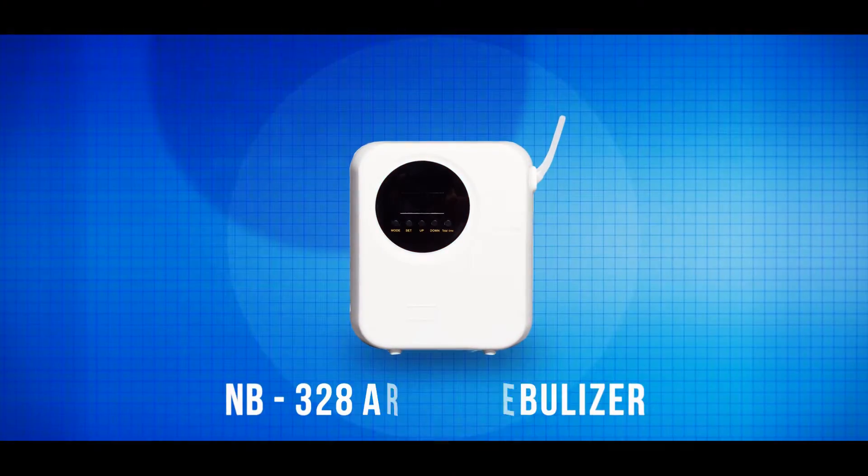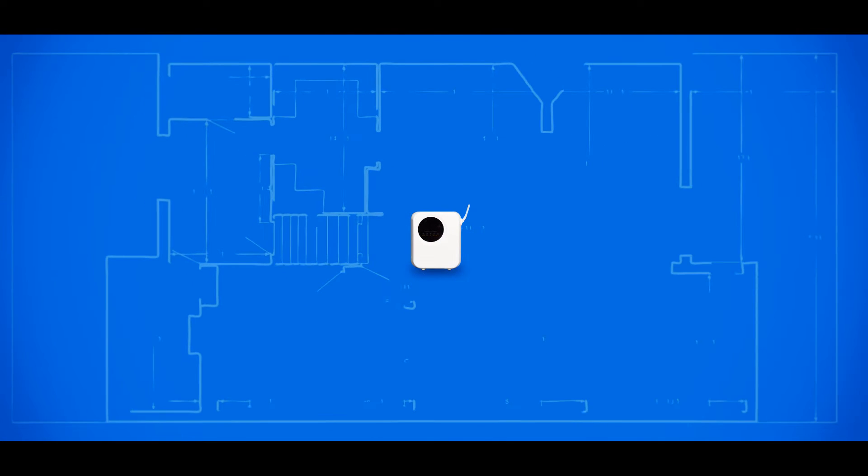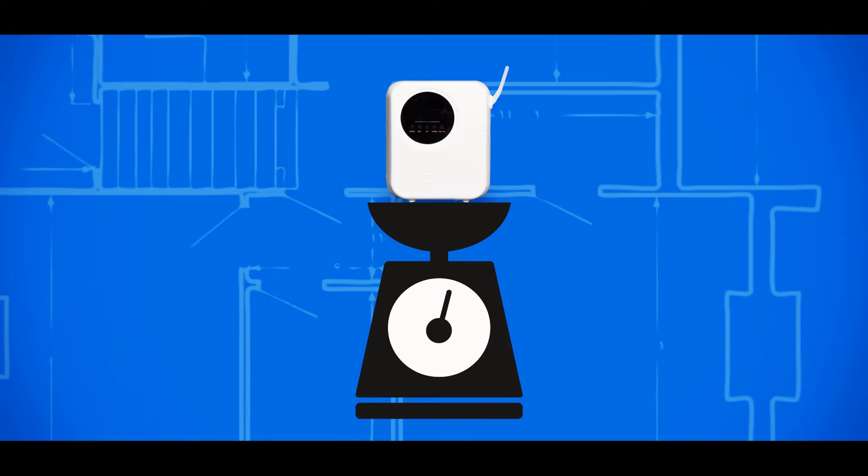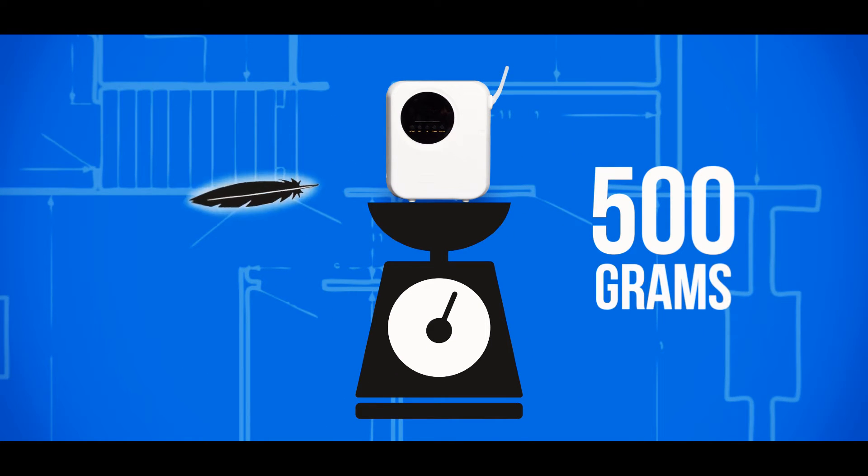Introducing the new Envy 328 Aroma Nebuliser. It is versatile with its coverage of 300 to 500 square feet and its light weight of just 500 grams, allowing the unit to be standing or mounted to the wall.